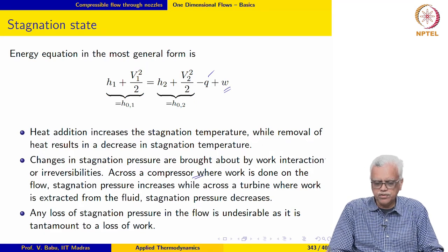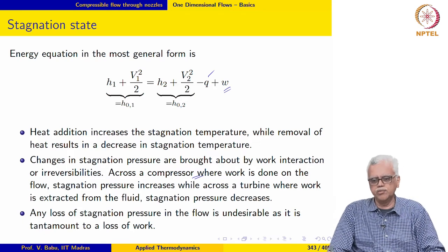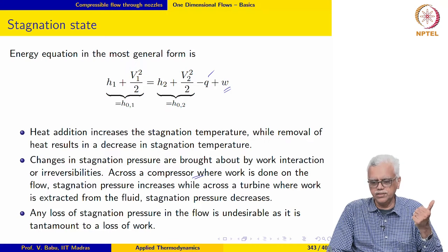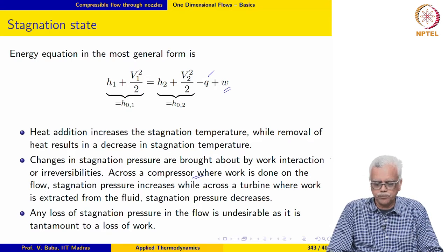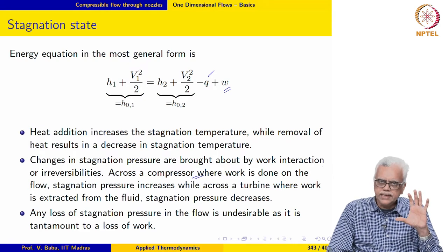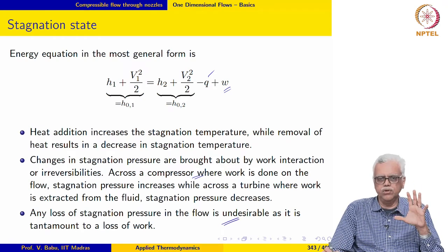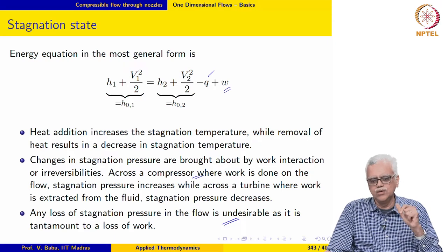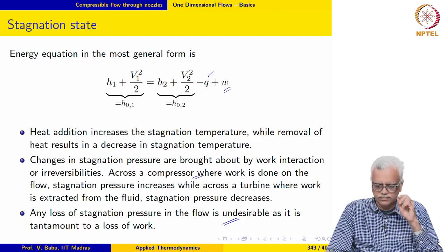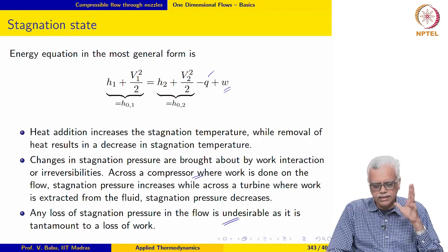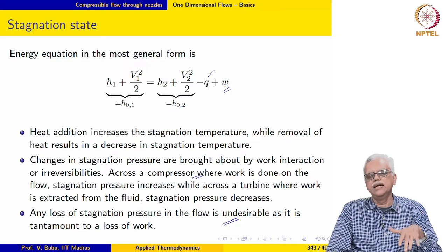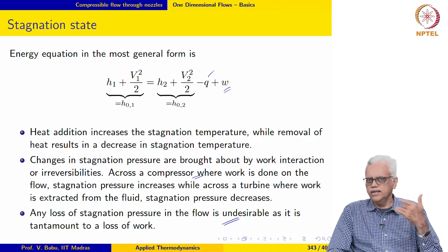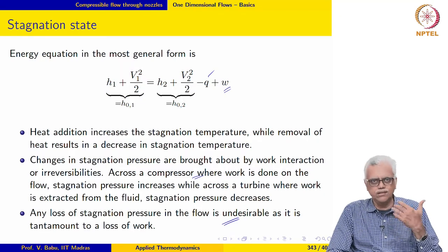Across an adiabatic compressor where work is done on the flow, stagnation pressure increases — W is negative in this sign convention. Across a turbine where work is extracted from the fluid, W is greater than 0 and stagnation pressure decreases. Any loss of stagnation pressure is undesirable because it is tantamount to a loss of work. Any loss of stagnation pressure indicates irreversibilities in the flow, resulting in entropy generation, loss of exergy, and loss of work.